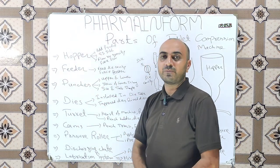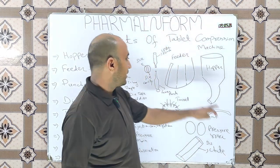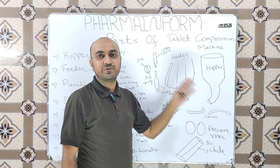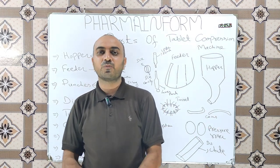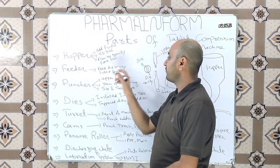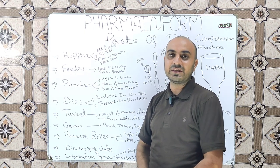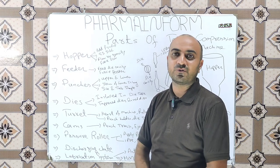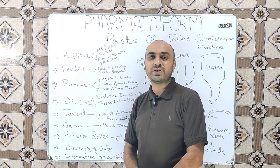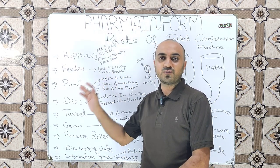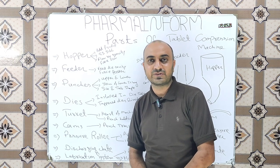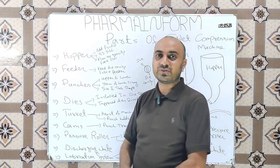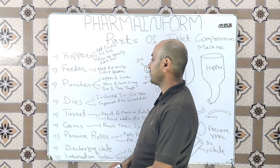The next main component of the compression machine is the feeder. As the name indicates, the feeder feeds the granules or powders to the die cavity. Feeding mechanisms are of two types: one is under the influence of gravity and the other is force feeders, which have fan-like structures installed in them. High-speed rotary compression machines are equipped with the force feeding system.